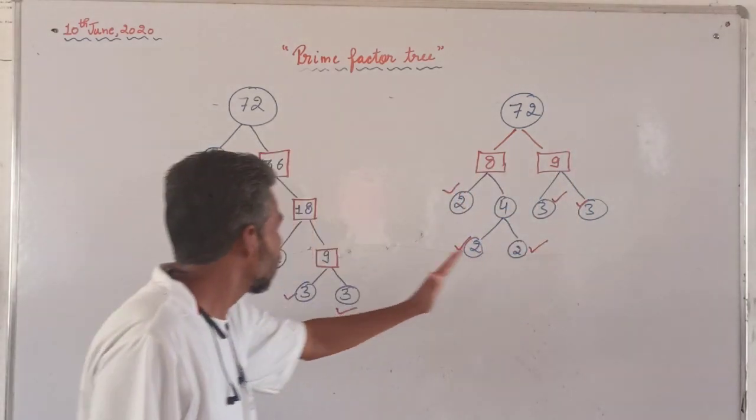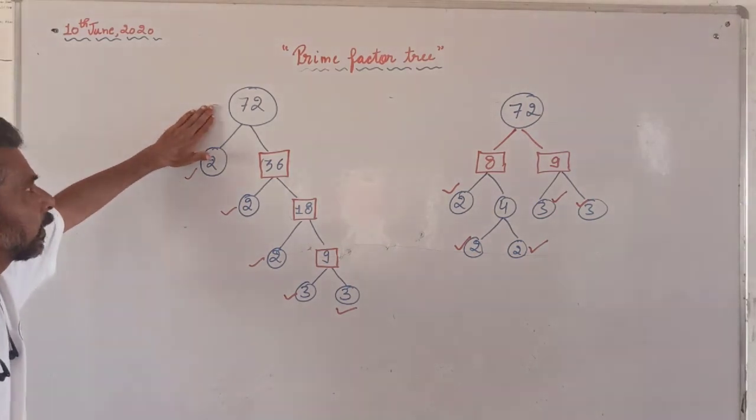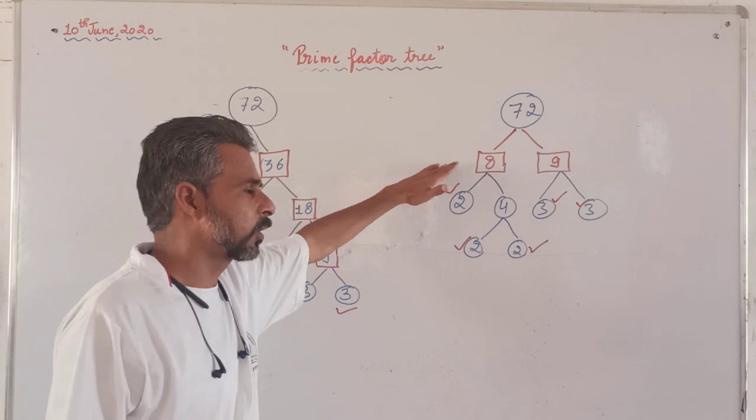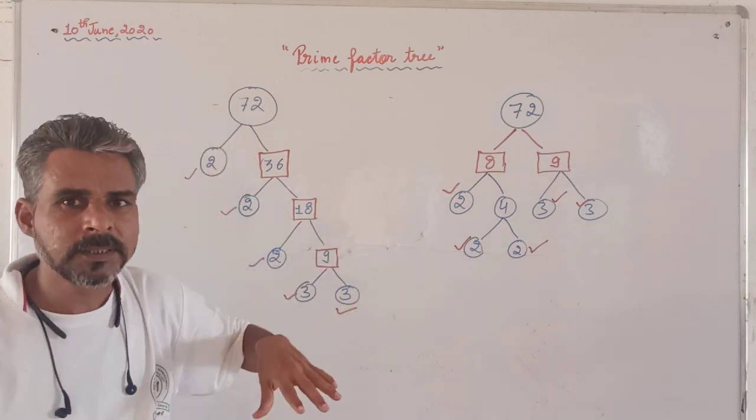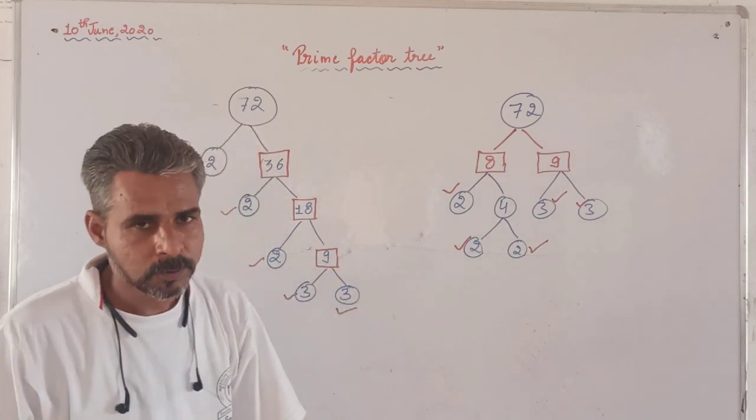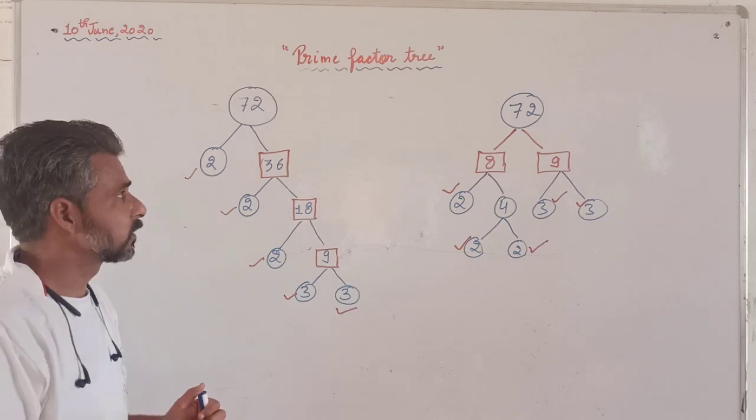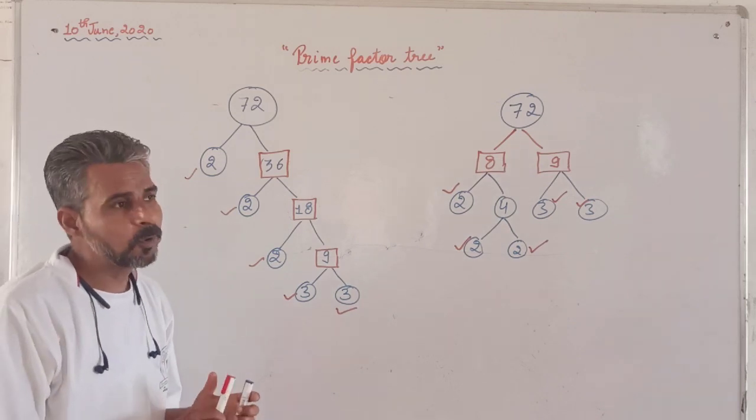You can use either this method or this method. This is the proper method. This one is the best method. This is also okay. But today in the worksheet you can use this method because the worksheet is based on both the methods. So this is the example for you of how to construct the factor tree.